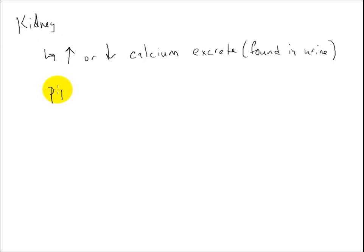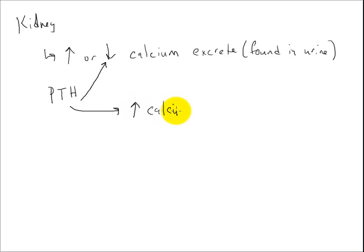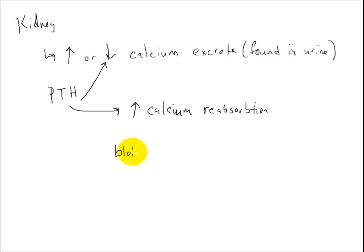With PTH, since its goal is to increase blood calcium, we want to decrease the amount of calcium excreted. So PTH will increase calcium reabsorption. Now, reabsorption is a specific kidney concept: blood plasma is essentially filtered as it courses through the kidney. The plasma gets moved into the kidney's functional units, which we call nephrons, and then it's up to the body to decide whether to bring substances back into the blood.